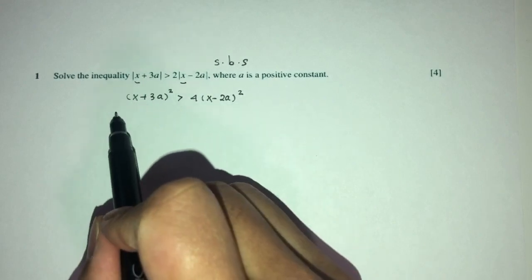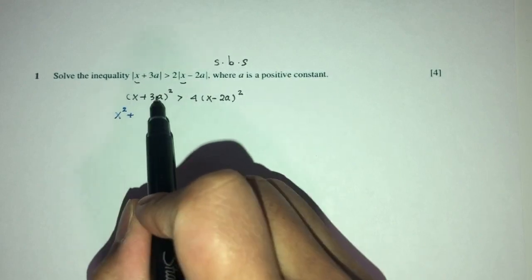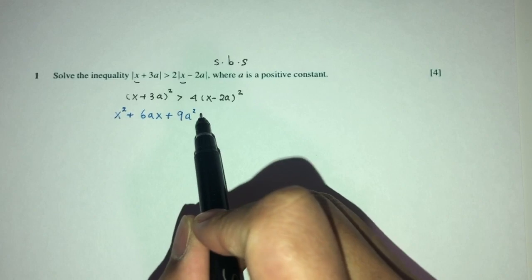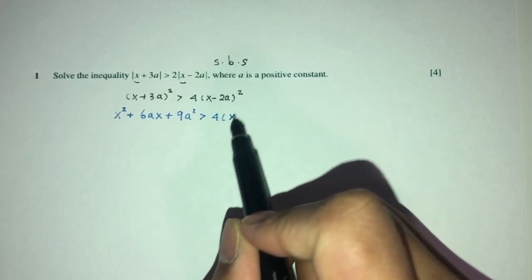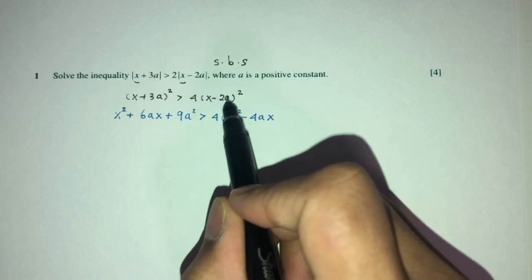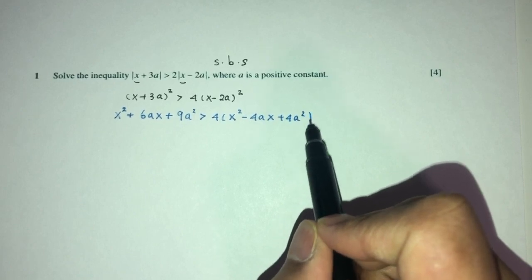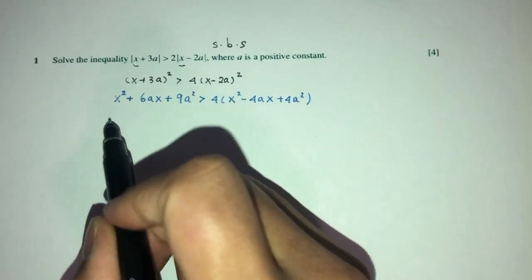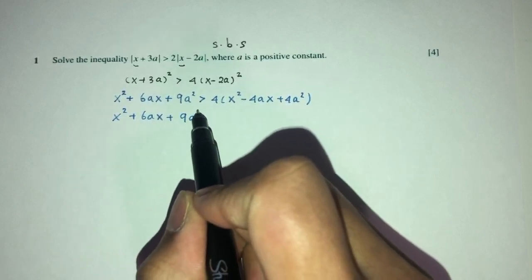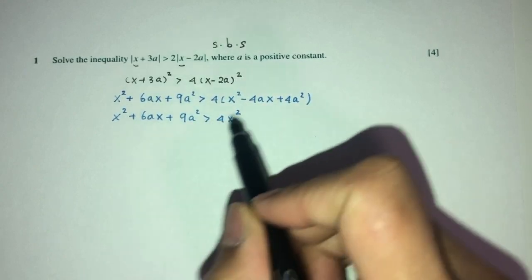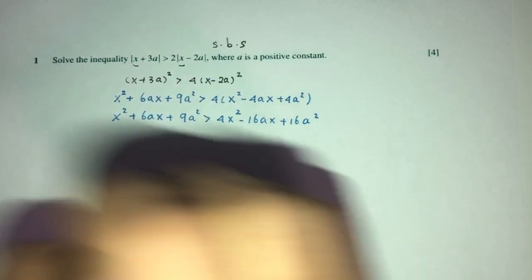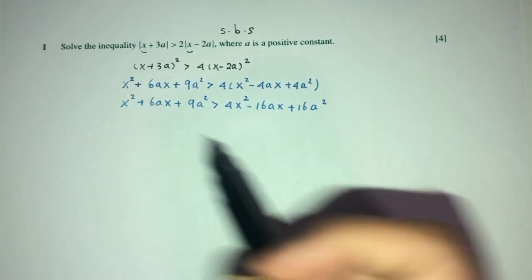Expanding the left side: x² + 6ax + 9a². The right side: 4 times (x² − 4ax + 4a²), which expands to 4x² − 16ax + 16a². So we have x² + 6ax + 9a² > 4x² − 16ax + 16a².